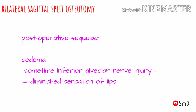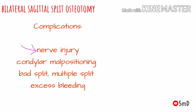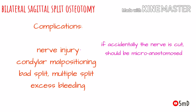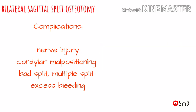Post-operative sequelae could include edema due to the bone cutting procedure, or diminished sensation of the lips due to neurovascular injury, which could be temporary or permanent. Complications include injury to the neurovascular bundle, malposition of the mandibular condylar head, bad split, or sometimes an undesirable multiple split. Excessive bleeding not controllable by normal hemostasis methods may also occur. Any neurovascular bundle injury initially found should be micro-anastomosed at the beginning itself. In cases of malposition of the condylar segment, a second surgery may be needed.